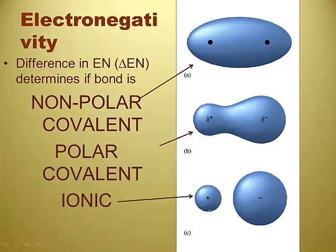For ionic, if the difference between electronegativities is greater than 2.0, then it is an ionic compound. So I subtract them — if the difference is 2.0 or more, I say it's ionic. For polar covalent: big electronegativity minus little electronegativity gives you anything between 0.5 and 1.9, and it is going to be a polar covalent bond. Anything less than 0.4 will be a nonpolar covalent bond.